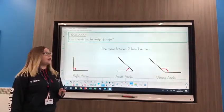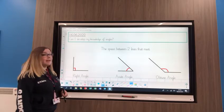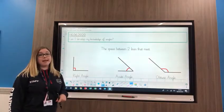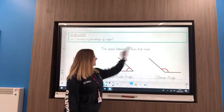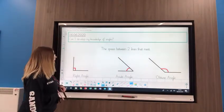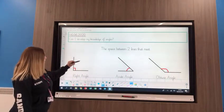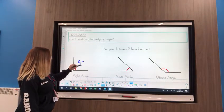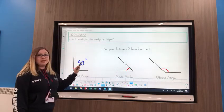For today's math lesson, our learning question says can I develop my knowledge of angles. Yesterday we learned that an angle is the space between two lines that meet, and we learned that there were three different types of angles. We learned that there was a right angle which is 90 degrees, and this little circle here represents degrees.